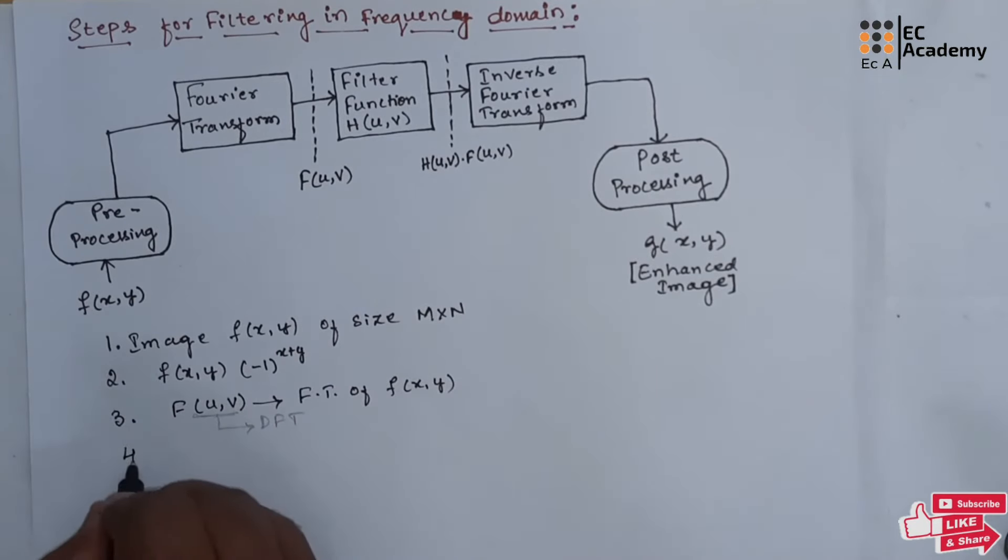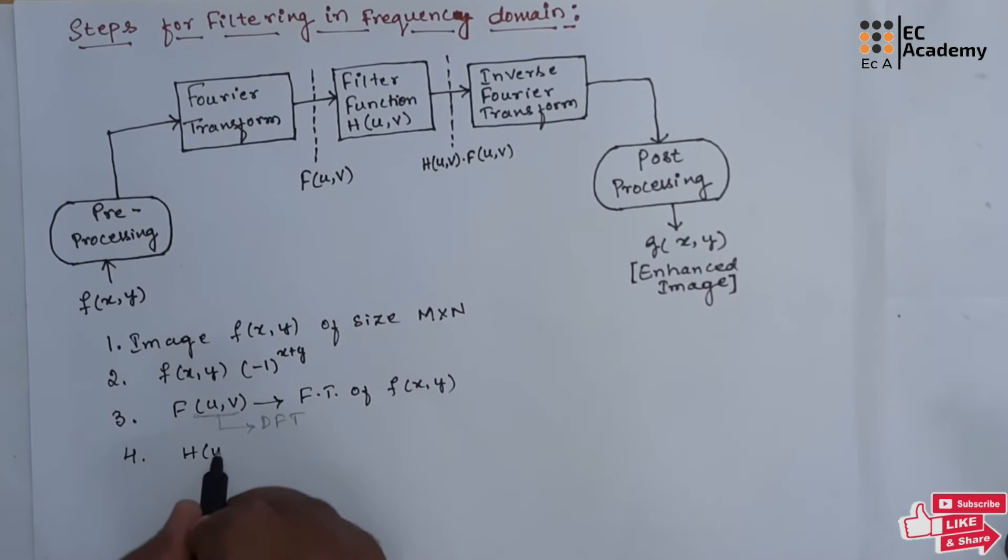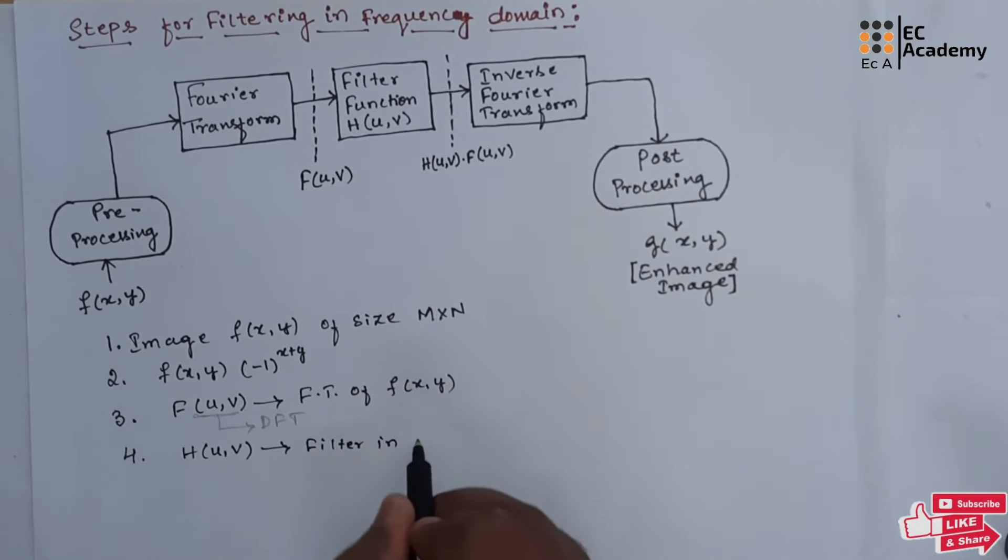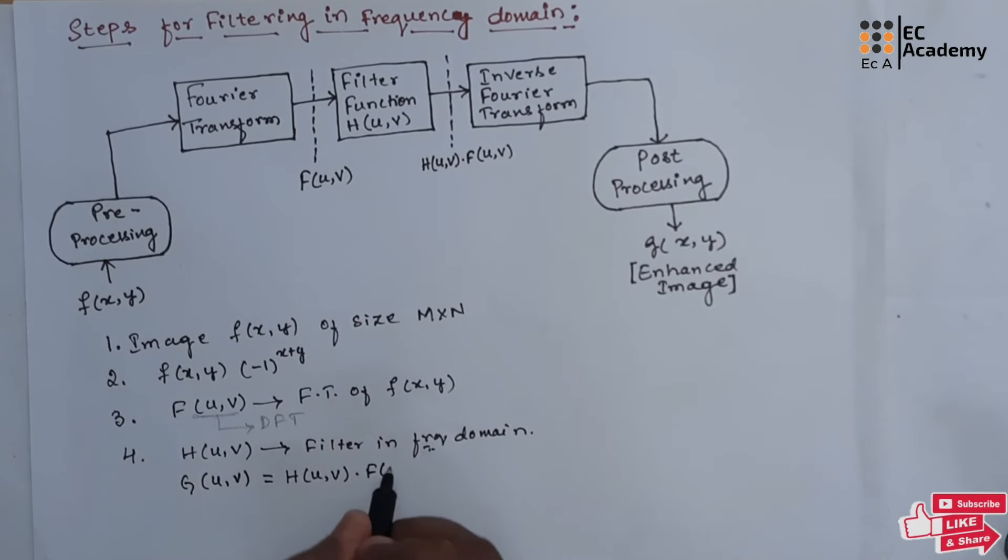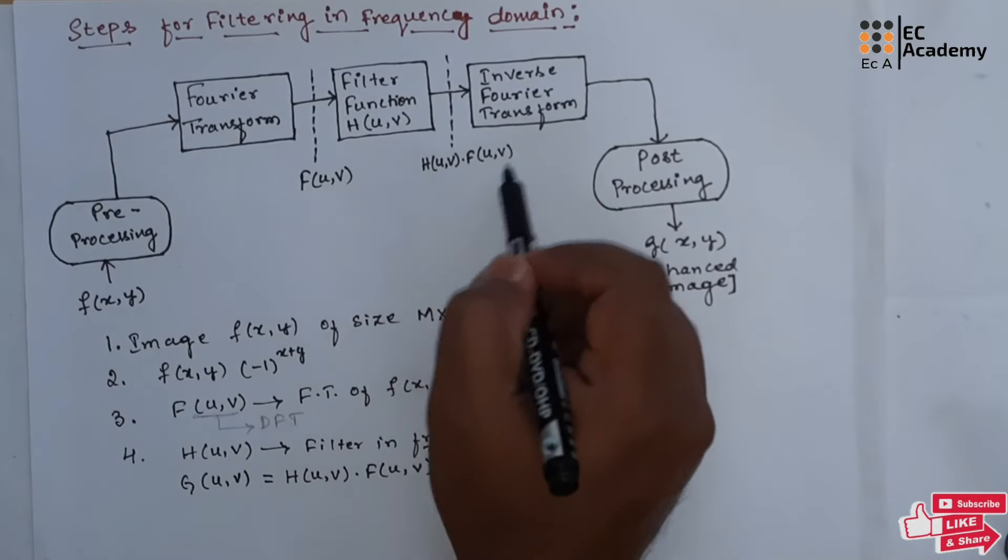In the next step, the filter function h of u, v is considered which is the filter in frequency domain. And these two values will be multiplied to get g of u, v which is equal to h of u, v into f of u, v.